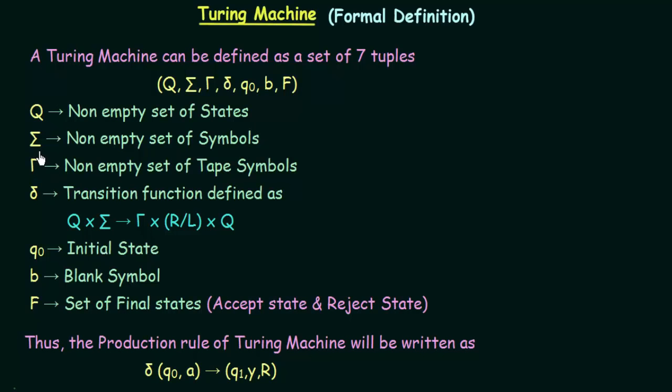Then we have Sigma, and Sigma also, just like the other machines that we have, represents the non-empty set of symbols, or we can say it is the set of input symbols that we have in our Turing machine.